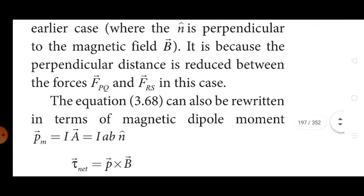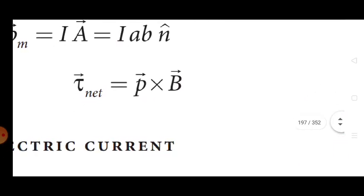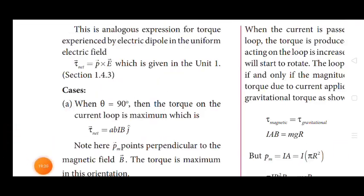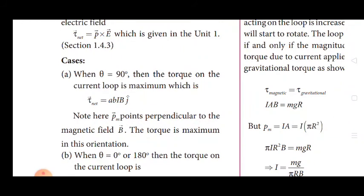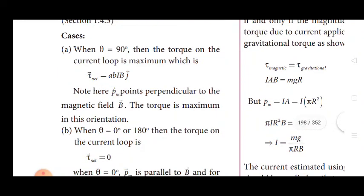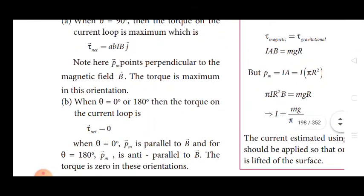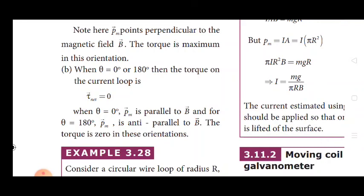The expression can also be written in terms of magnetic dipole moment: p_m vector = IA vector = IAN̂. So the net torque is τ = p_m vector × B vector, which is analogous to the torque experienced by an electric dipole in a uniform electric field: τ = p vector × E vector. When θ = 90°, τ_net = ABIBĵ, which is maximum — p_m vector is perpendicular to B vector. When θ = 0°, torque is zero (p_m parallel to B). When θ = 180°, p_m is anti-parallel to B, and torque is again zero.